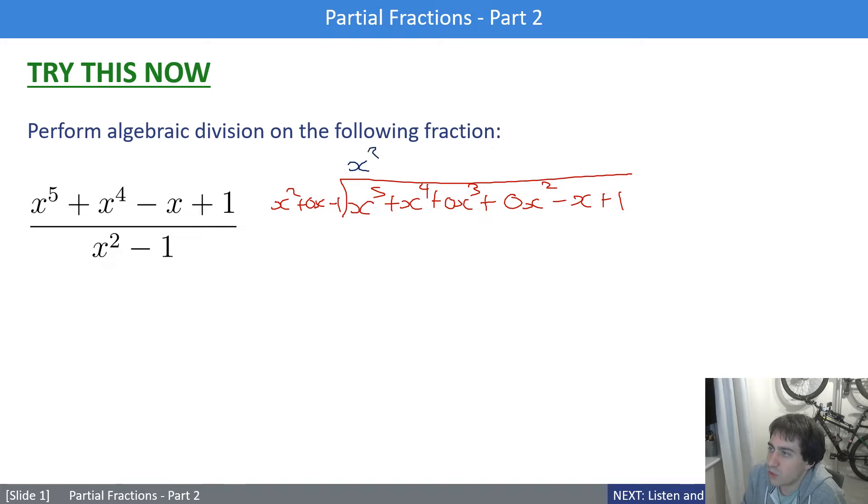Up here I'm going to have an x^3. That gives me a matching x^5 + 0 - x^3. Let's take that away. I'm left with x^4 + x^3. So I'm going to put an x^2 here. That matches up to give me x^4 + 0. I should have brought down that 0 there as well. Then x^2 times x^2 + 0x - 1 is x^4 + 0 - x^2.